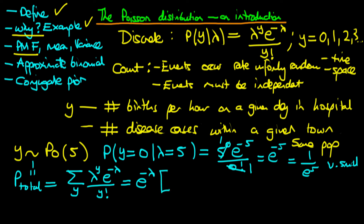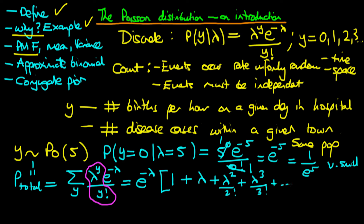Looking at the remaining sum: when y equals zero we get one over one, which is one; when y equals one we get lambda over one factorial, which is lambda; then we get lambda squared over two factorial; then lambda cubed over three factorial; and so on. We recognize this pattern as the Maclaurin series expansion of e to the power lambda, which equals e to the power lambda for any value of lambda.